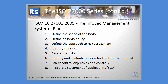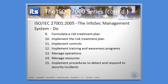We've just covered the plan cycle. During the do cycle, we're going to formulate a risk treatment plan, implement that plan, implement the controls, do some training and awareness and education, and then manage the ongoing operations and resources allocated to those operations. And then when some abnormal things happen — some security incidents — you want to be able to detect and respond effectively to those security incidents.